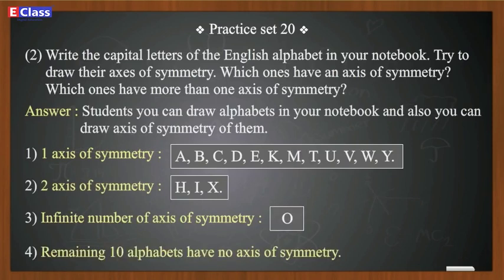Number 4: Remaining ten alphabets have no axis of symmetry. Dear friends, here I have solved two questions as an example. Now you have to solve the rest of the questions.